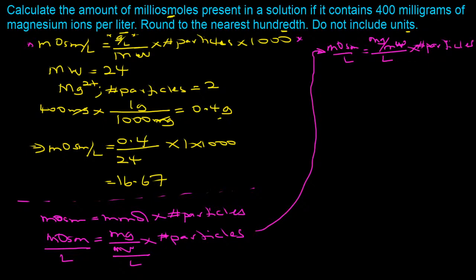Using this alternative approach: milligrams per liter is 400, molecular weight is 24, and number of particles is 1. So milliosmoles per liter = (400 ÷ 24) × 1 = 16.67 — the same answer as before. These are two very useful approaches, and once you understand the concept well, you can choose whichever works more expeditiously for you.